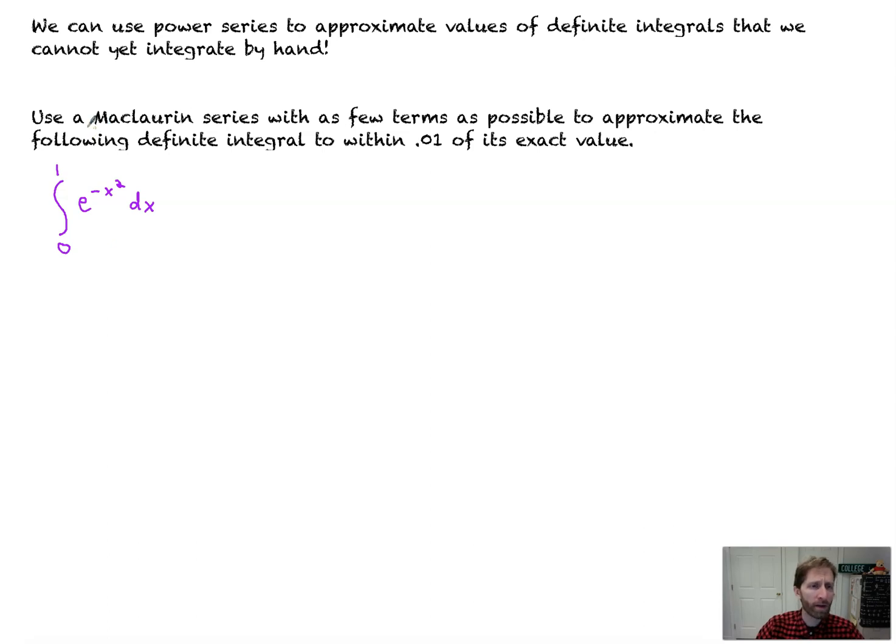So what you have here is an instruction that says use a Maclaurin series with as few terms as possible to approximate the following definite integral to within 0.01 of its exact value. Oh my word. How are we going to accomplish that feat? Well, we'll see how to do that right now.